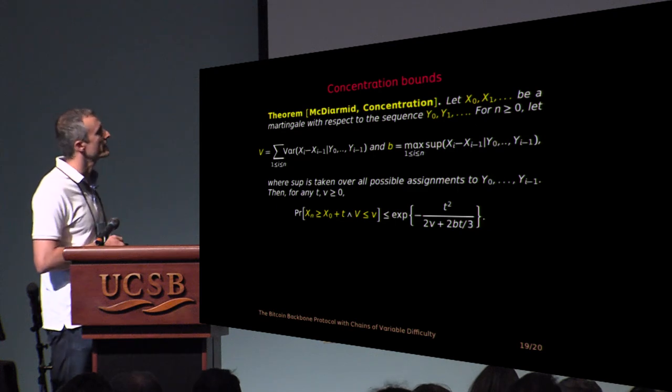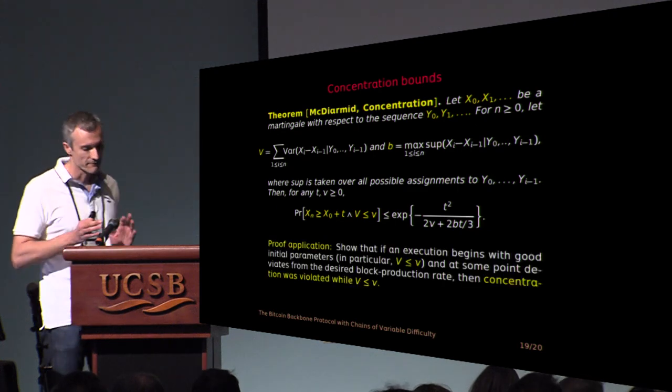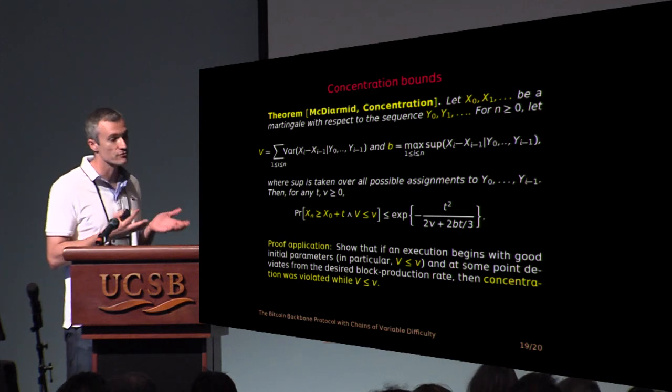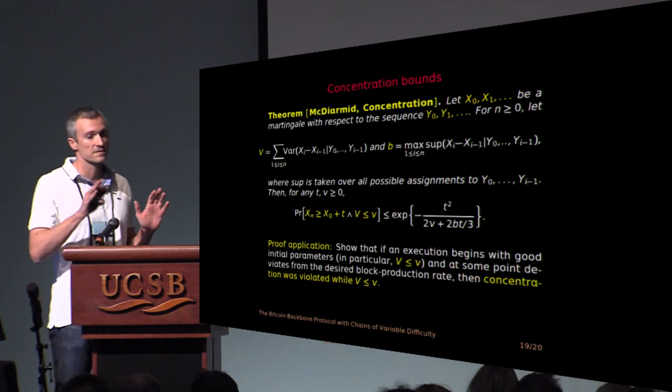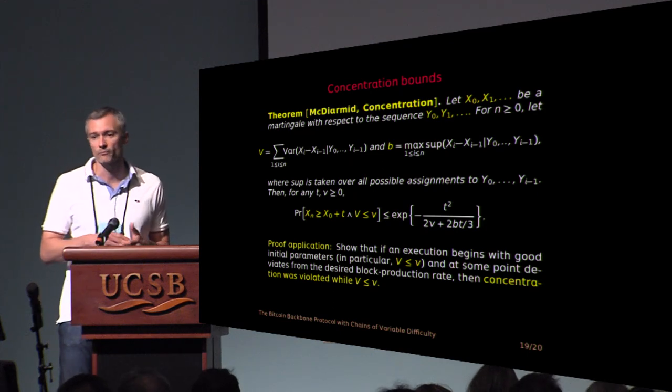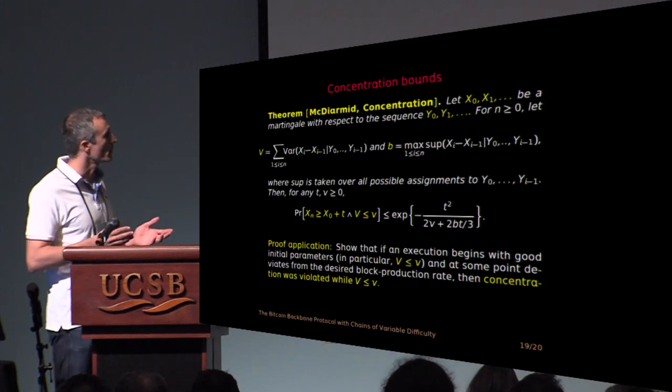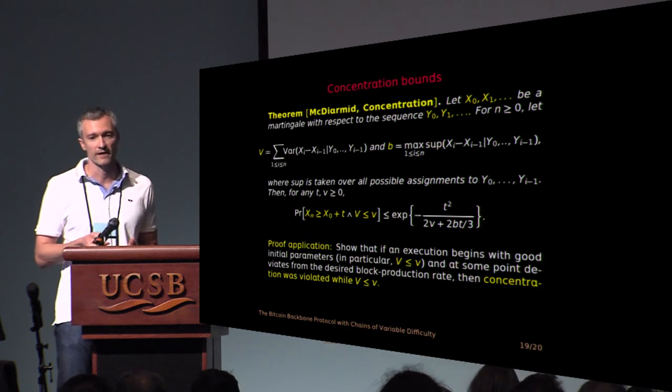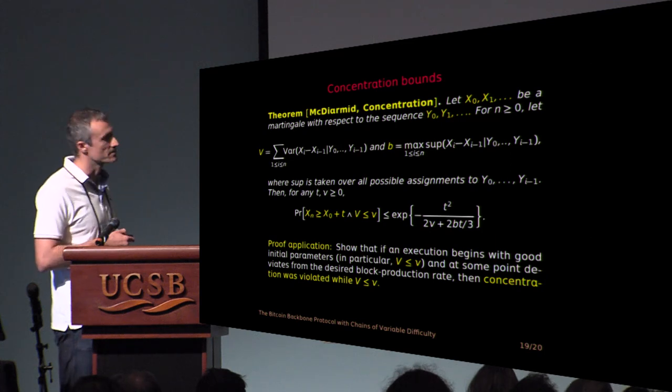So using this you can define a set, the typical set. And then the proof at a very high level goes as follows. You show that if you start with a good execution, but somewhere in the way your block production rate is not where you want it to be, then concentration was violated while the variance was small, which is a small probability event by this theorem.